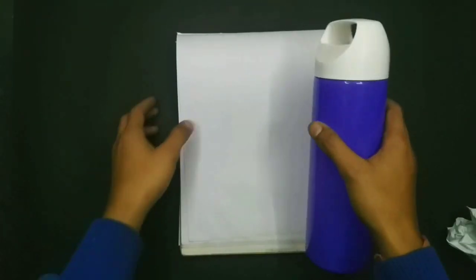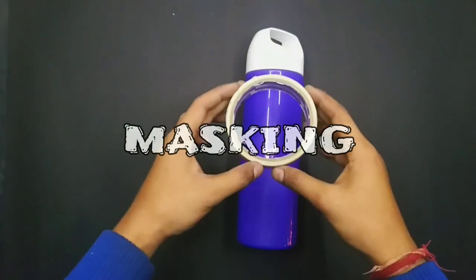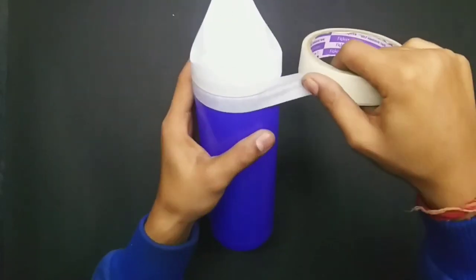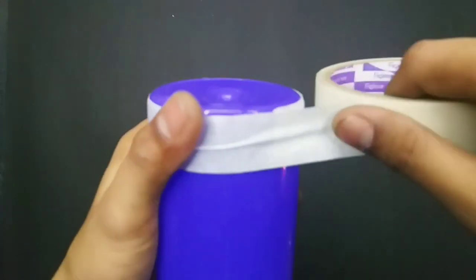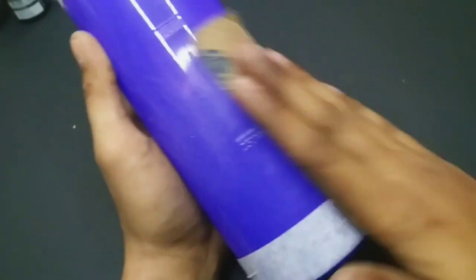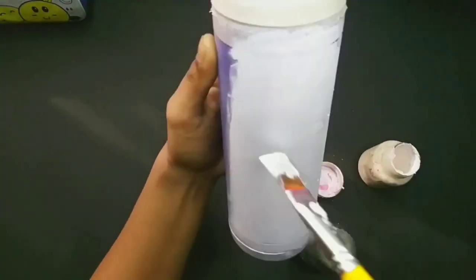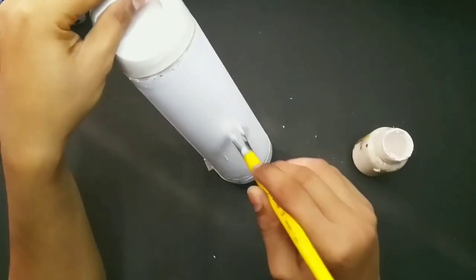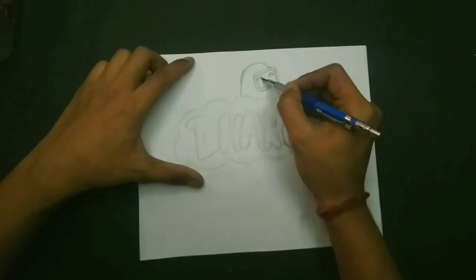Before we start painting, we have to sand it nicely. We are finally done with the sanding and now I'm using some acrylic white for the base coat. Let it dry for some minutes and we're gonna start with the drawing.